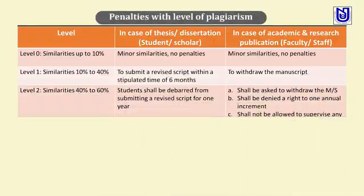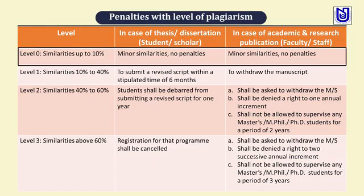Now we can see the penalties identified by the Regulation. There are four levels of plagiarism: Level 0, Level 1, Level 2 and Level 3. In Level 0, similarities up to 10%, there are two categories: thesis or dissertation prepared by students and scholars, and academic and research publications prepared by faculties or staff. In Level 0, nothing would be penalized because up to 10% is acceptable — no penalties are imposed for minor similarities in either case.